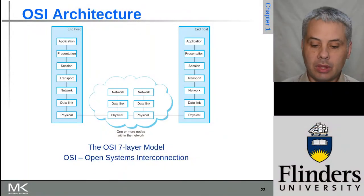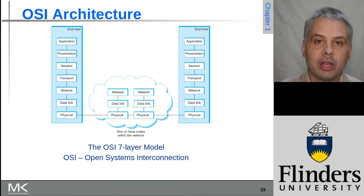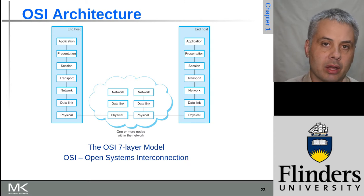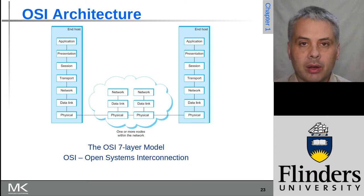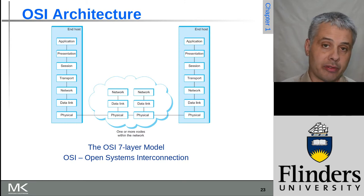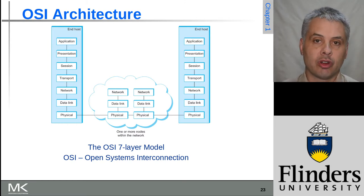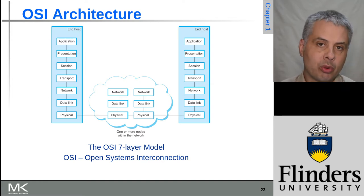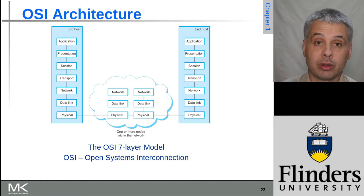Welcome back to Computer Networks: A Systems Approach, chapter one. We're now up to slide 23, looking at the OSI and internet layered network architectures. We're starting with the OSI architecture. This is a seven-layer model that is very well known. Not many systems actually implement something like this anymore, because the internet architecture layered model has really taken over as the dominant model, but this was a very important model in the history of layered network development and is still used as a reference model.